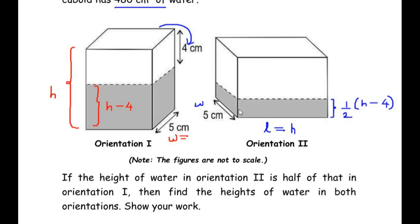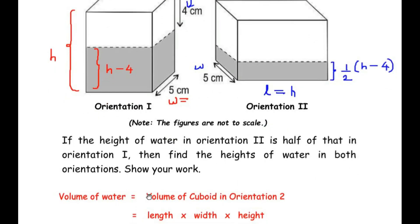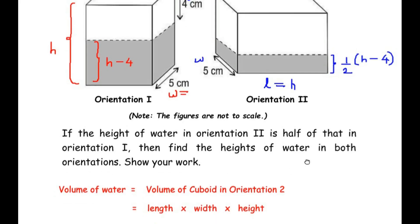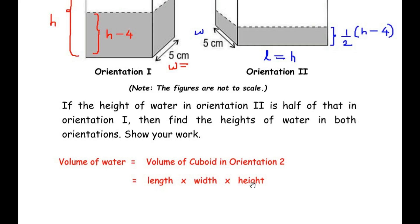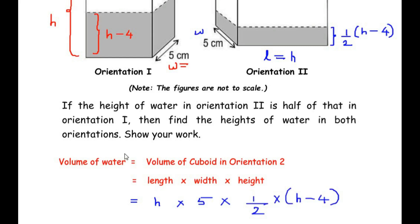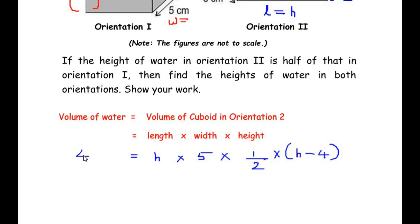Now let us find the volume of water inside the cuboid. Volume of water equals volume of the filled portion of the cuboid in orientation two, since water takes the shape of the cuboid. Volume of cuboid equals length times width times height, so we write: h times 5 times one-half times (h minus 4) equals 480 cubic centimeters.